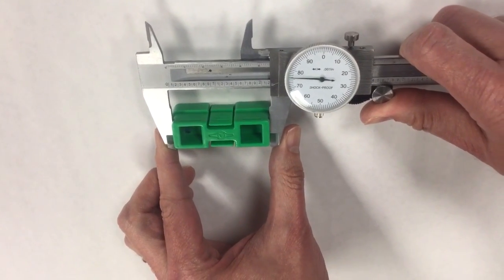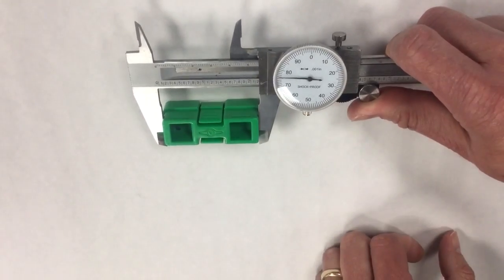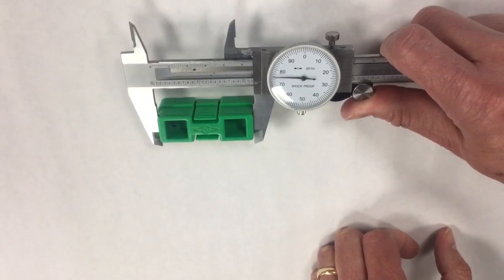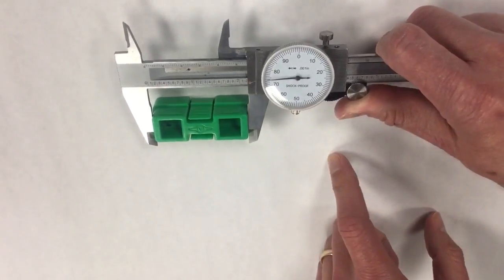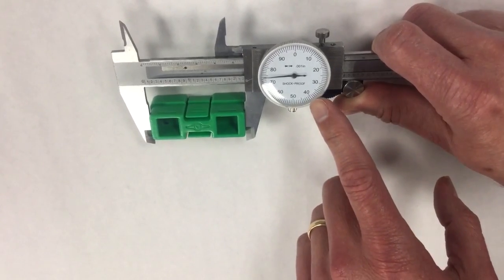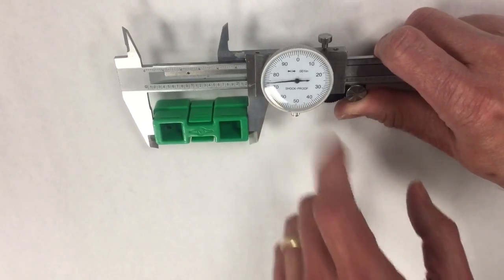To read the caliper, you're going to look at the numbers here. The larger number is the number of inches, that would be 2 inches. Then we go to tenths of an inch, 2.1, and finally to hundredths and thousandths of an inch. So this would be 2.175.